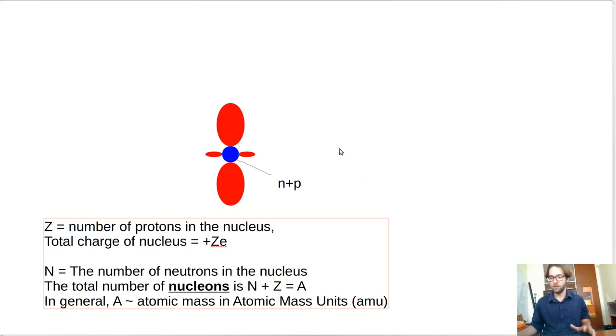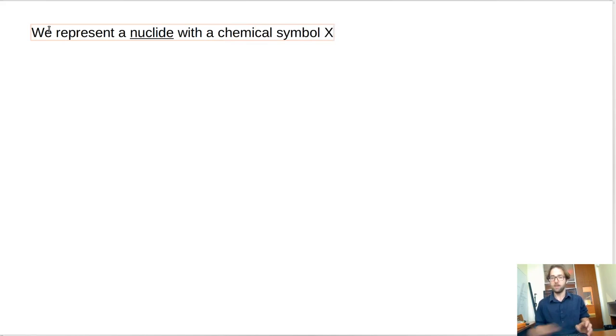So that's very close to what the, it's a good substitute for what the atomic mass is of a particular nuclide, or of a particular isotope. So I'll say in general, A is approximately the atomic mass in atomic mass units, or AMU. So it's not always, but that is one possibility.